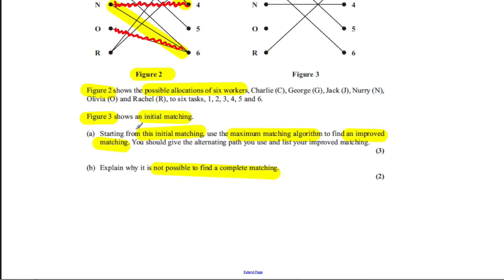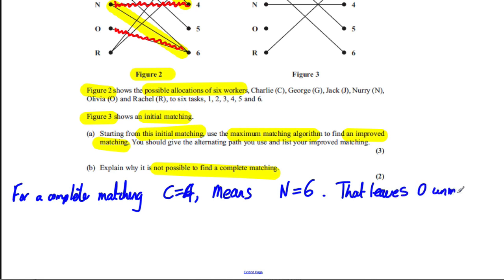And that's the only place O can go. So therefore, O would remain unmatched. So the way I'd write this down, I would say, for a complete matching, C must equal 4, which means N must be 6. And that leaves O unmatched, so complete impossible. And that would be done for Part B.